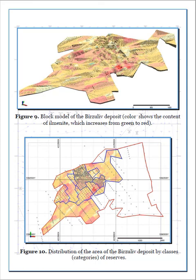As a result of creating a report on the block model, the distribution of Ilmenite reserves was obtained. The total amount of balance reserves (B + C1 + C2) of Ilmenite of the Berzoloff deposit amounted to 4,526,000 tons. The error in calculating inventories was 8.3 percent.